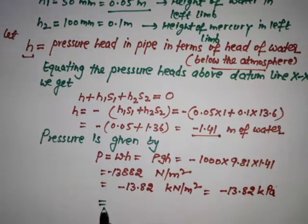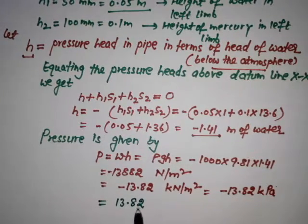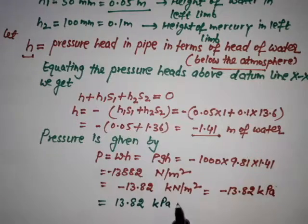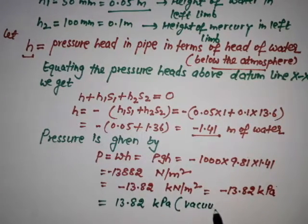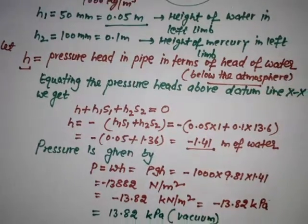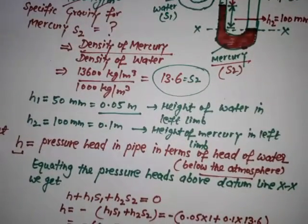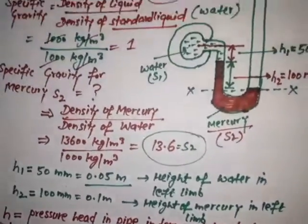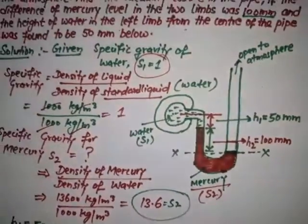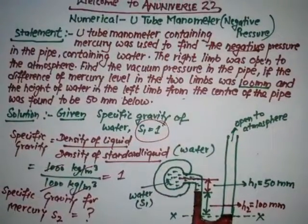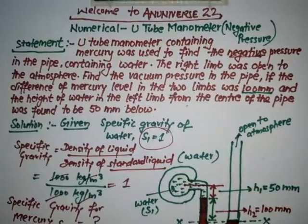We can write this as minus 13.82 kilo Newton per meter square, or minus 13.82 kilo Pascal. This can also be expressed as 13.82 kPa vacuum. This is the final answer. If you like this video, please share it with your friends and students. Don't forget to subscribe to NUniverse2. Thanks for watching. Have a nice day.